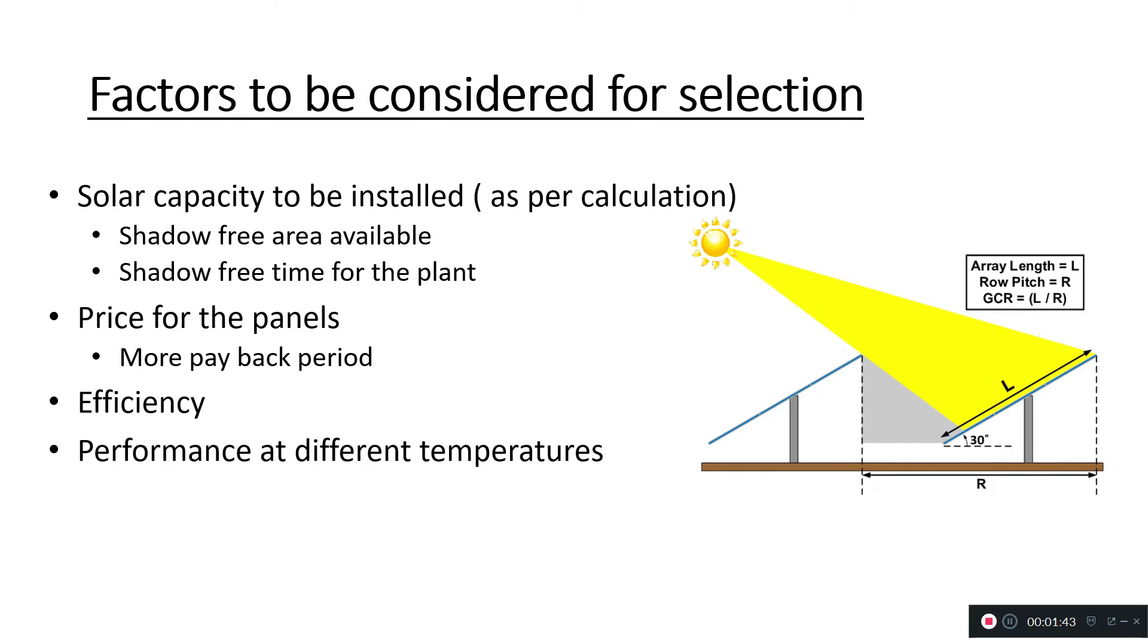By doing your electricity bill analysis for a particular facility, you come up with a particular solar capacity which you need to install. First thing you need to do is know the shadow-free area available for installation at the particular site.